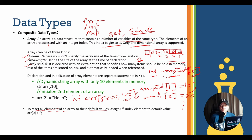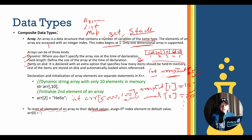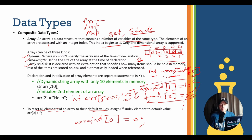To reset all elements of an array to their default values - recall that for integer the default is 0, for real it is 0.0, for string it is an empty string, for date it is the 1900 null date - you use index position 0. For example, if my array is named arrayInt, I write arrayInt[0] = 0; and this resets all array elements to their default values.